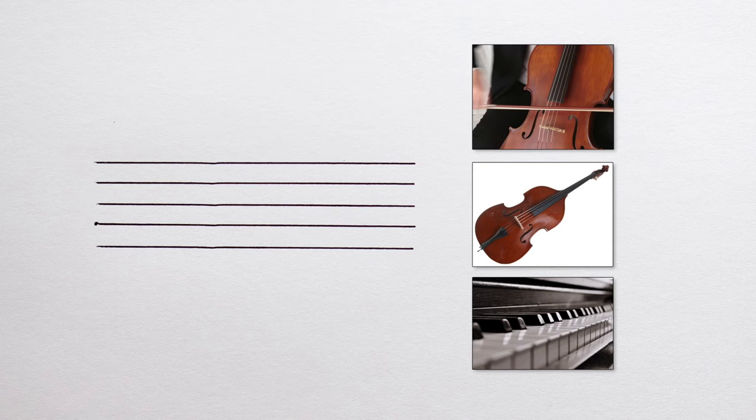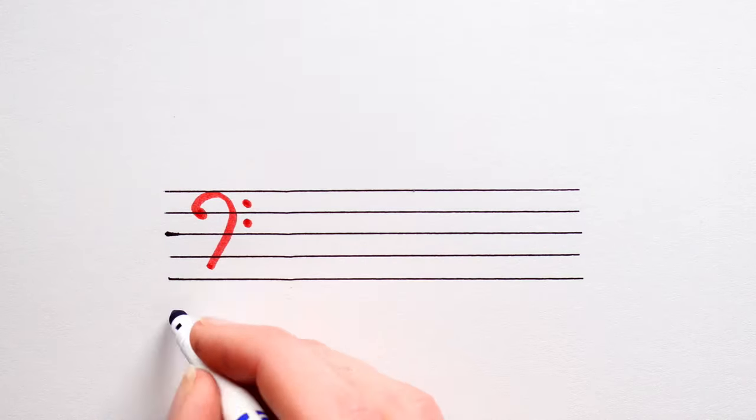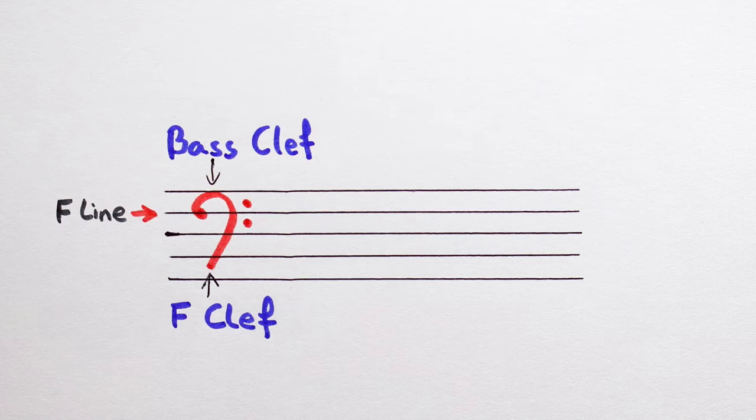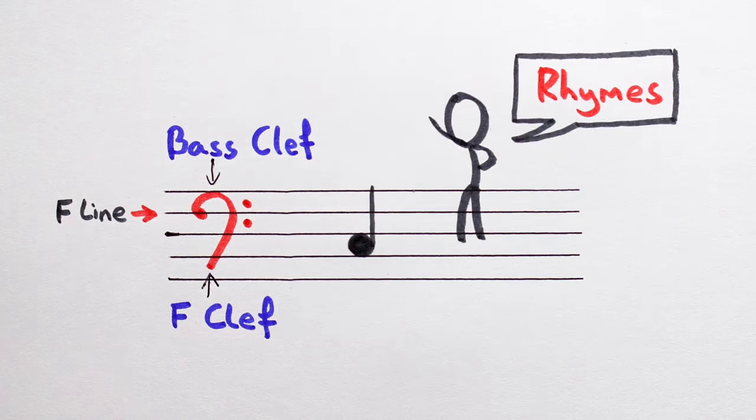Because of their low pitch, low sounding instruments use a different clef, the bass clef. Also known as the F clef, the bass clef tells us what each of the lines and spaces are called. And just like the treble clef, the bass clef comes with its own set of catchy rhymes to help us read the notes.